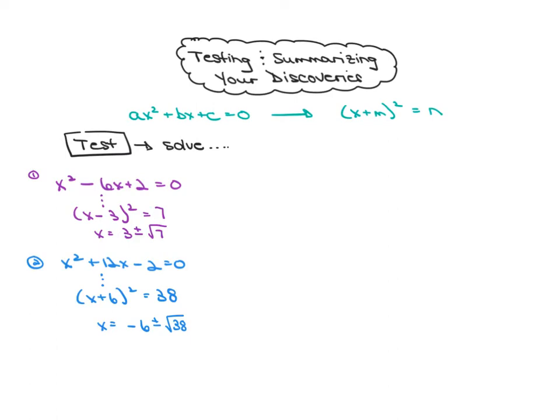All right welcome back here are the solutions. The first equation, using your discovery hopefully you're able to convert it into this equation x minus 3 squared is equal to 7 which is something you can solve using the square root method and you'll get the two solutions 3 plus the square root of 7 or 3 minus the square root of 7.